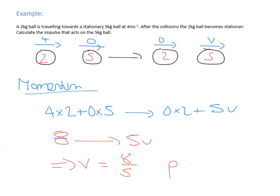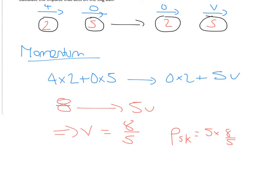we end up with 8 on this side going to 5V, which means the velocity is equal to 8 over 5. So the momentum of the 5 kilogram afterwards would be the mass times velocity, so times 8 over 5, which is 8 kilogram meters per second.